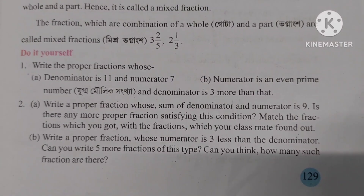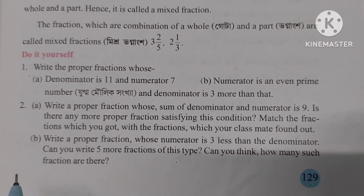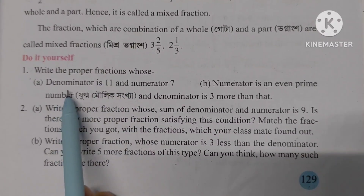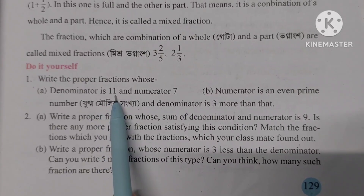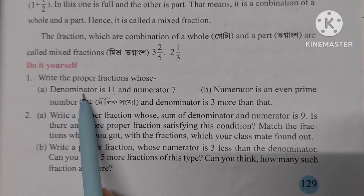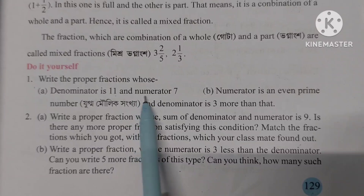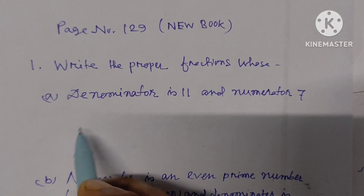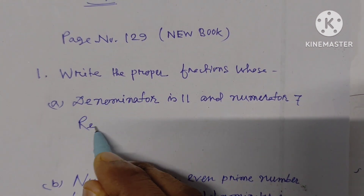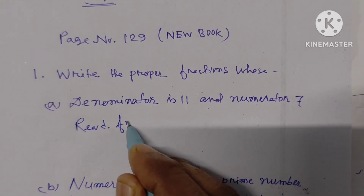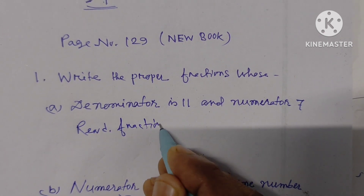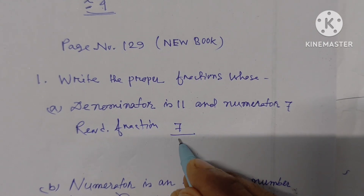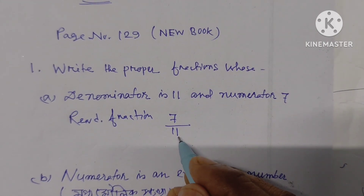Write the proper fractions. Proper fractions means the numerator is less than the denominator. The denominator is 11 and the numerator is 7. So numerator is 7 and denominator is 11, that means the fraction is 7 by 11.